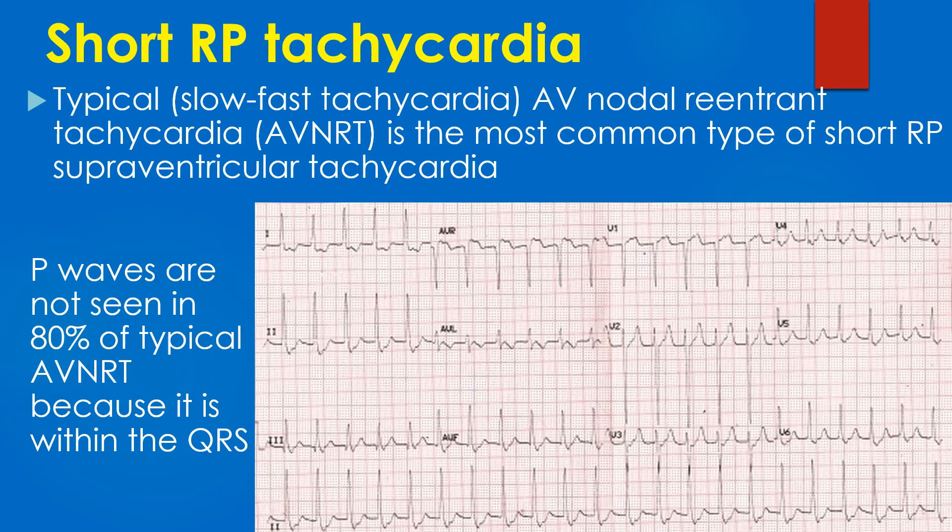Accessory pathway-mediated atrioventricular reentrant tachycardia (AVRT) is the other form of short RP tachycardia, in which the P wave falls at the end of the QRS.